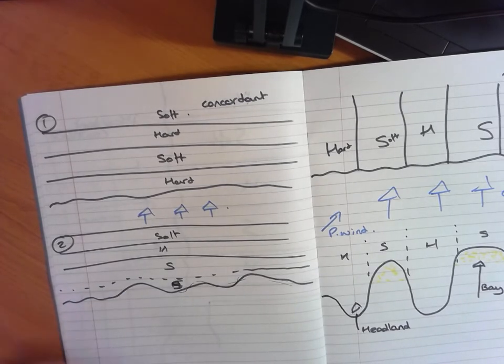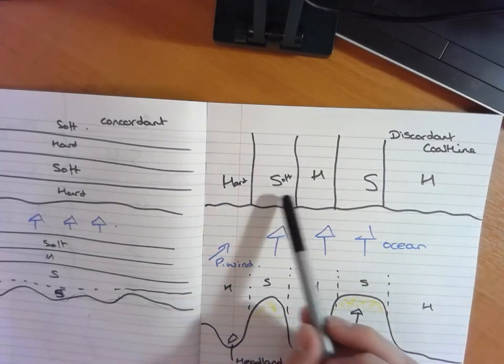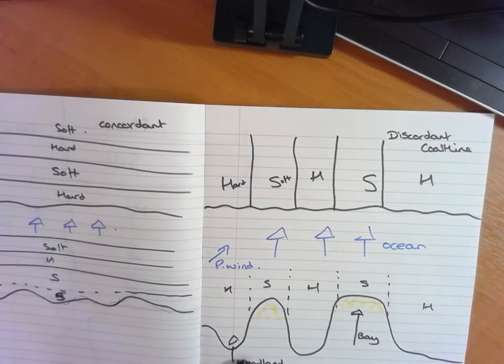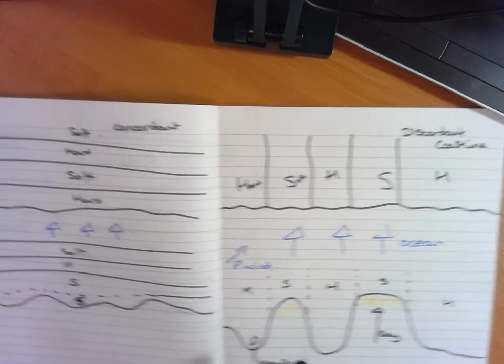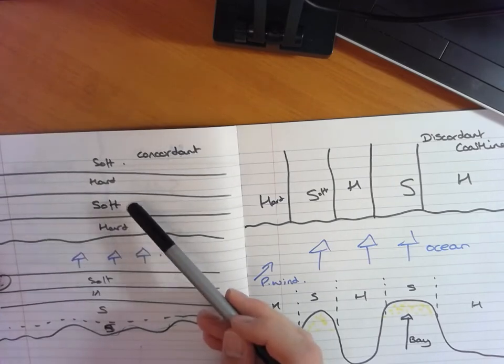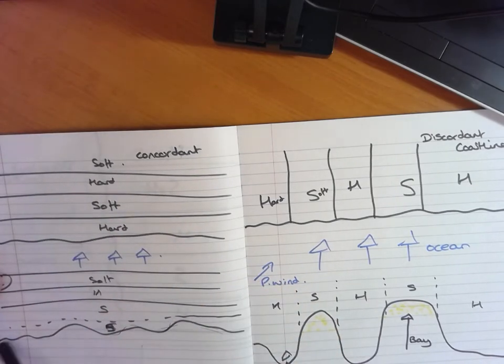So again, to recap, discordant coastline: harder and softer bands, you get headlands and bays, you get depositional landforms such as beaches being created. On a concordant, you get parallel hard and soft rock strata. And then over a significant period of time, you just don't get those key geographical features that we've talked about with discordant coastlines because it's eroded at the same pace. It can either be harder or soft.